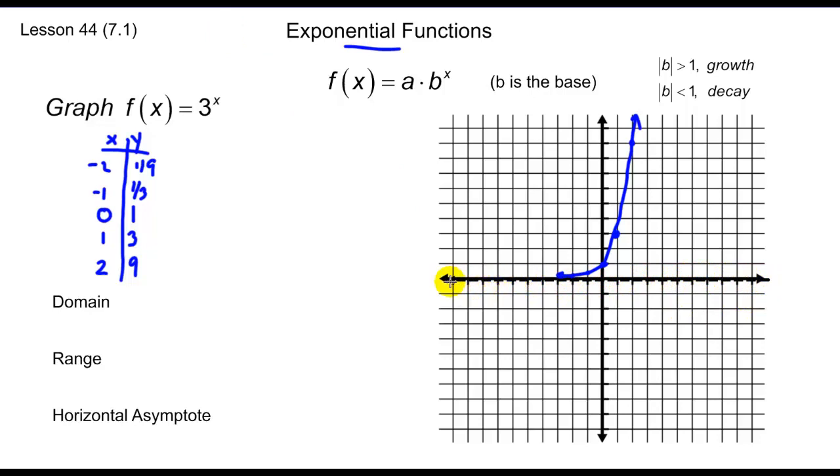That horizontal asymptote is going to be along this line here, which is the line of y equals 0. My domain talks about what are my possible x values. You see that this arrow goes to the right forever and to the left forever. So in this case we have all reals.